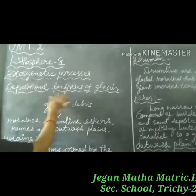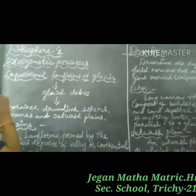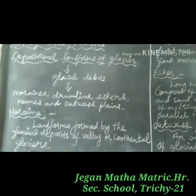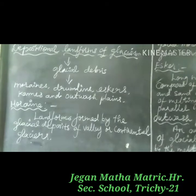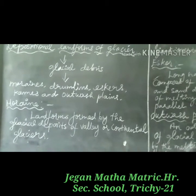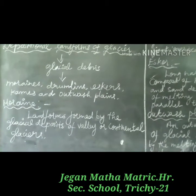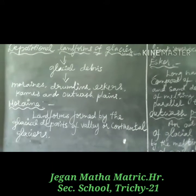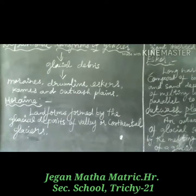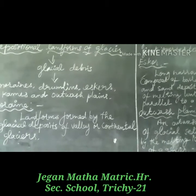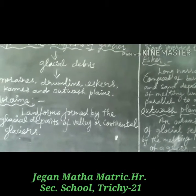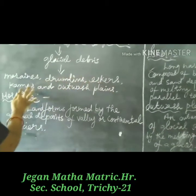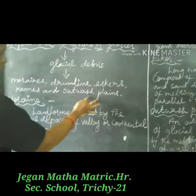Depositional Landforms of Glacier. What is glacial drift? After getting eroded, fragments of rocks and boulders along with debris from glacial drift get deposited in low-lying areas and form depositional features like moraines, drumlins, eskers, and outwash plains.